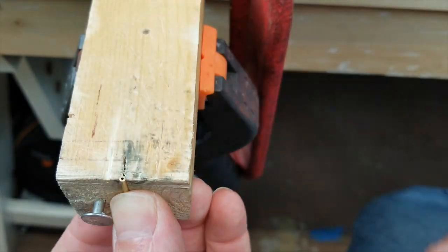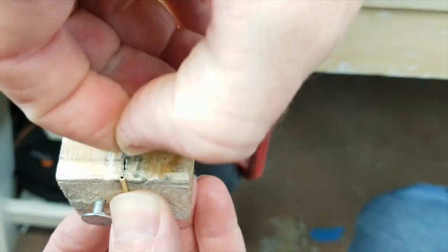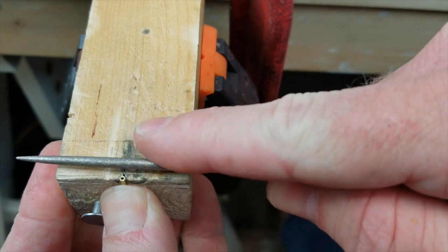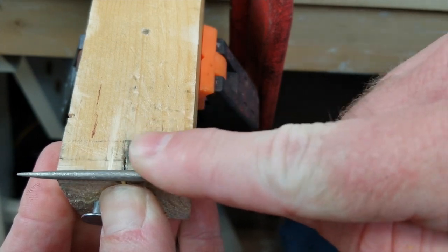I then take both upper and lower tubes and on one end using a round diamond file, I like to give them both a fish mouth cut. This makes fitting the eyelets to them much easier and makes a stronger joint.